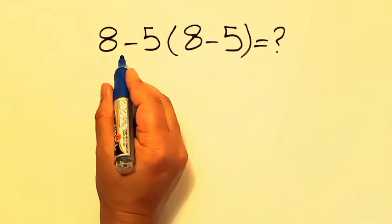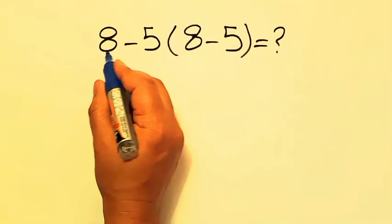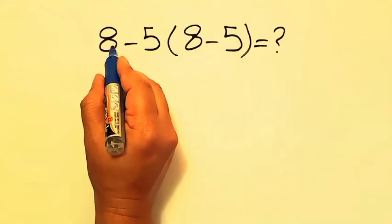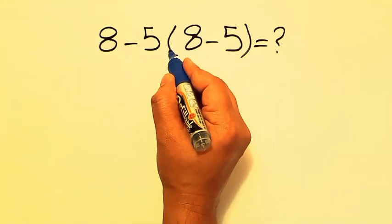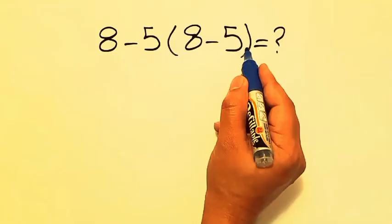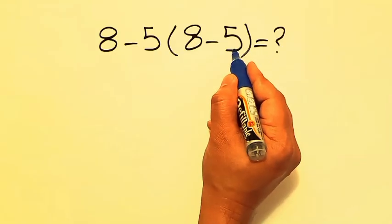Hi guys and welcome to this video. In this video, we want to find the value of this expression, which is 8 minus 5, then times these parentheses. And inside these parentheses, we have 8 minus 5 again.